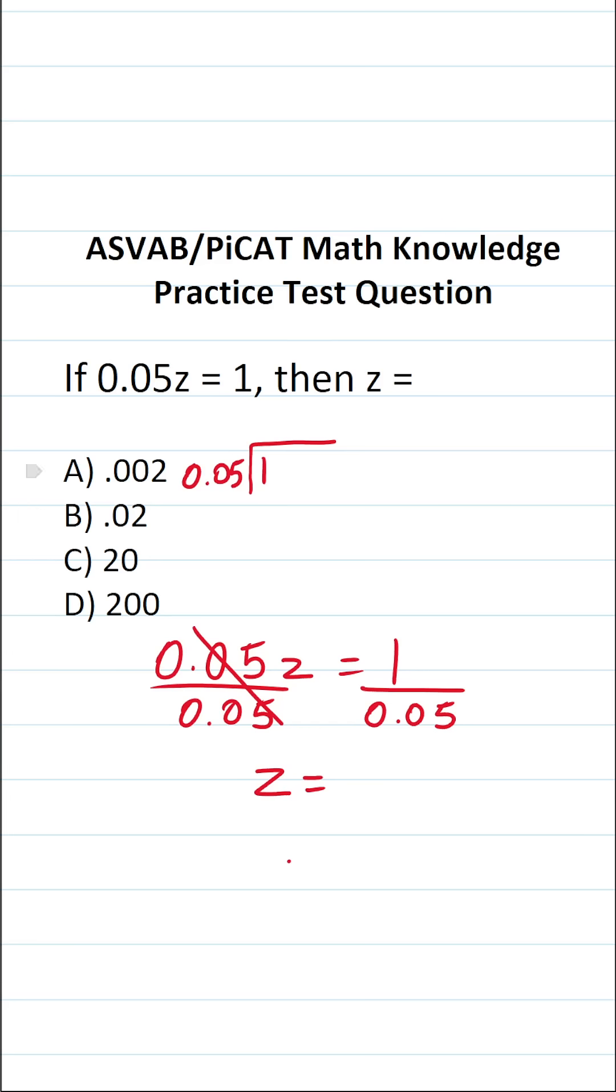In order to do this division, we have to clear the decimal in 0.05. More specifically, we have to shift it 1, 2 times to the right to make it just 5. And at the same time, we're going to take the decimal in 1, and we're going to move it a corresponding number of times to the right as well, 1, 2. And we're going to add 2 zero placeholders. So this becomes 100 divided by 5.